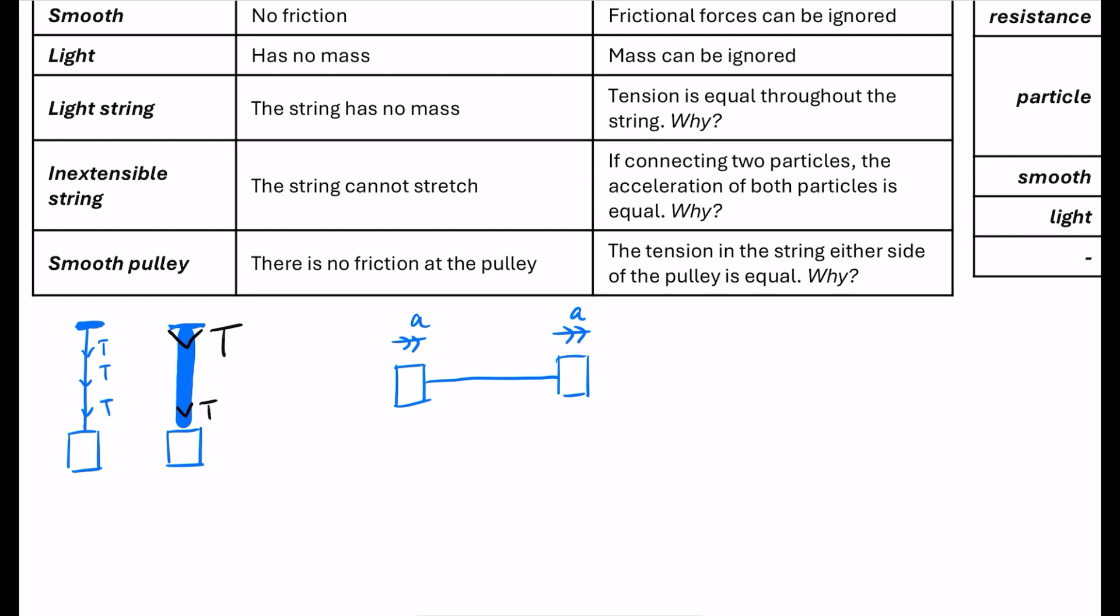And then our last one that we're going to talk about is a smooth pulley. This means that there is no friction at the pulley. Great. But how are we actually using that in our calculations? It means that the tension in the string either side of the pulley is equal. So here's the pulley that we've got here. I wonder if I can do a better circle than that, if it will make a circle for me. And if we imagine some string sort of draped over it like this, if I can draw that in. Now, if this, again, I'm always thinking of the opposite.